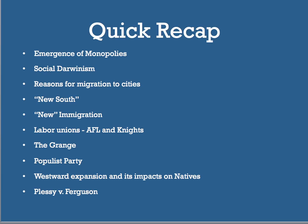To recap Period 6: you need to know the emergence of monopolies, where they come from, and their impact on society. Know social Darwinism and how it justifies monopolies. Know the pull factors of cities, jobs, and urbanization through the New South and new immigration. Know the labor unions — the AFL and the Knights of Labor. Know the growth of farmers' organizations from the Grange to the Farmers' Alliances to the Populist Party. Know the Last West and its impact on Native Americans and the Indian Wars. And know Plessy v. Ferguson. If you have questions, I'll answer them in class, and I'll see you shortly for the Period 7 Part 1 video.